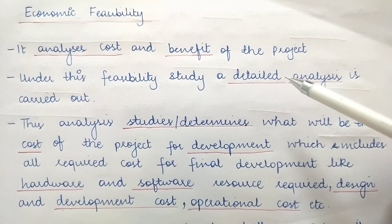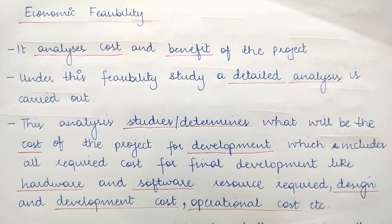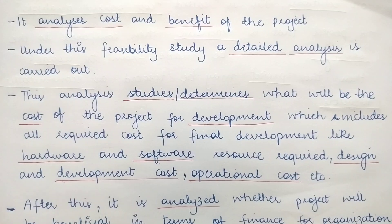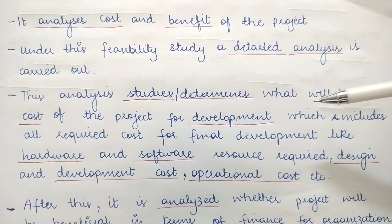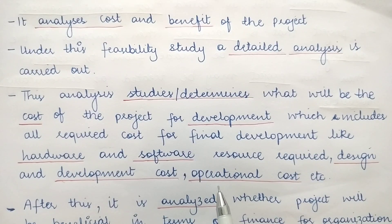This detailed analysis determines what will be the cost of the project for development, which includes all required costs for final development — like hardware and software resources required, design and development cost, and operational cost. When we analyze the cost, it covers everything required for development: the cost for procuring the hardware, the cost for procuring the software, and the cost for the design and development of the project.